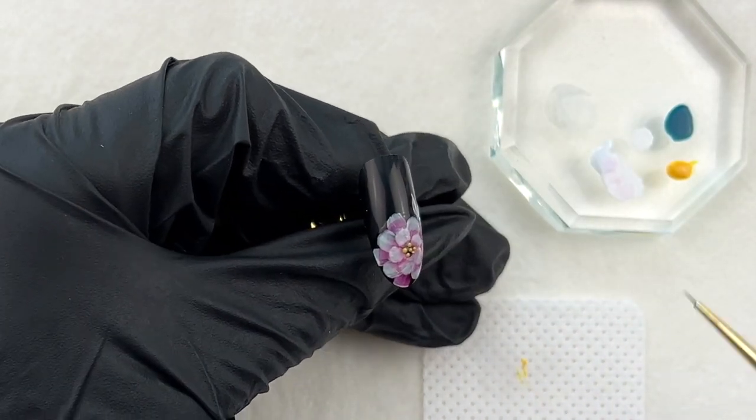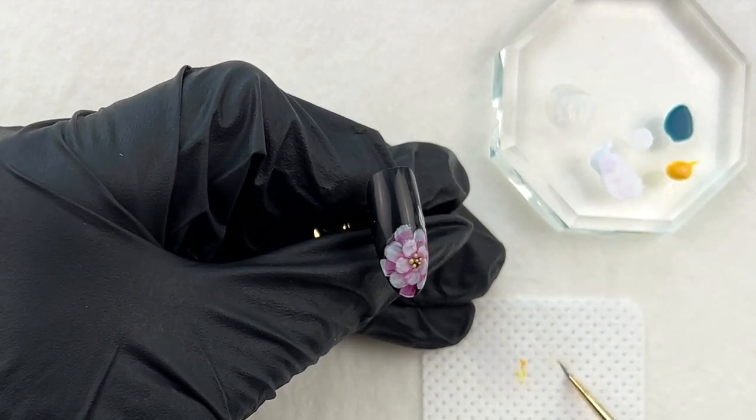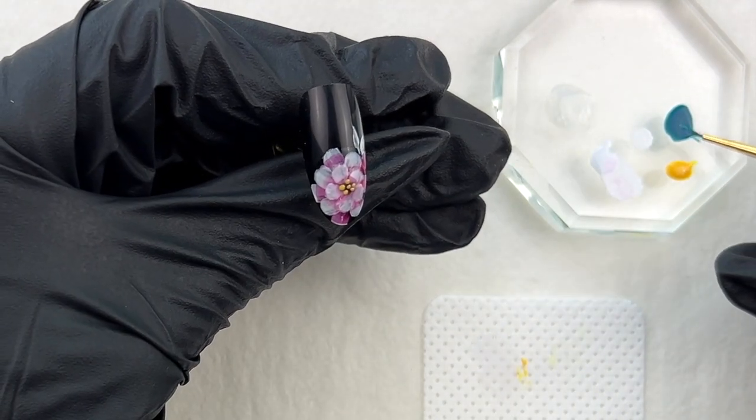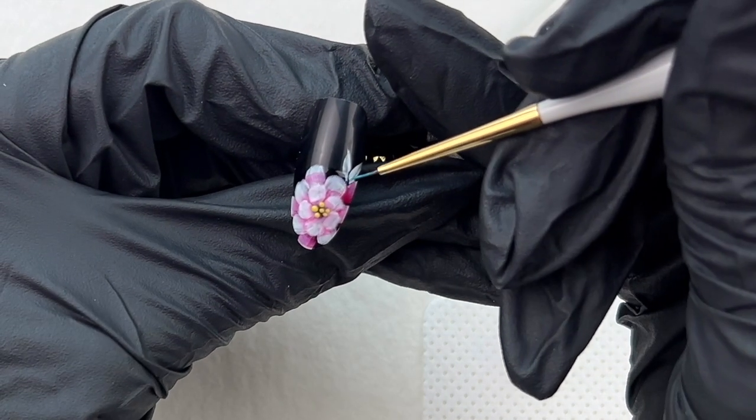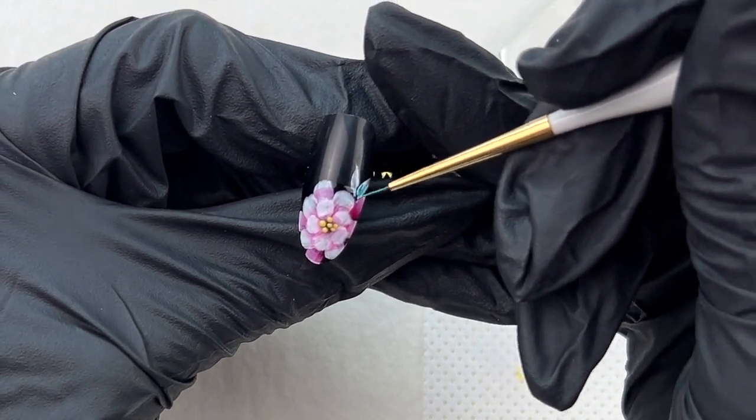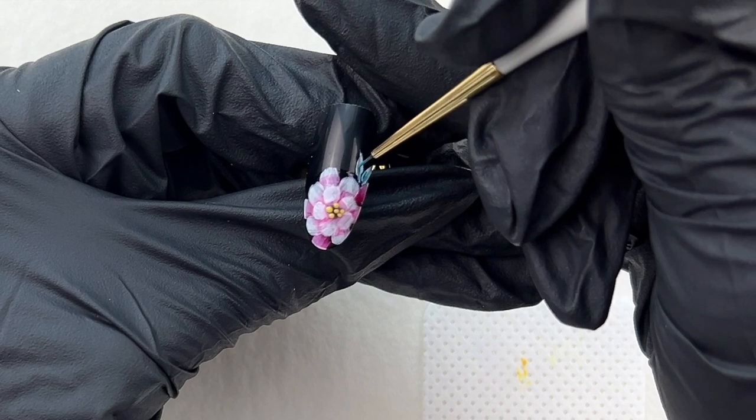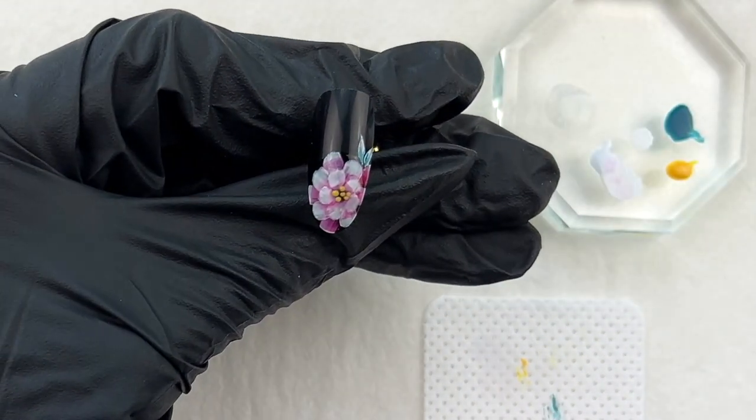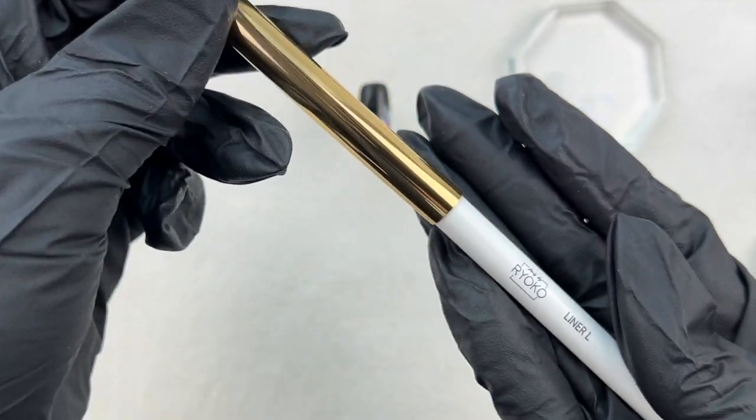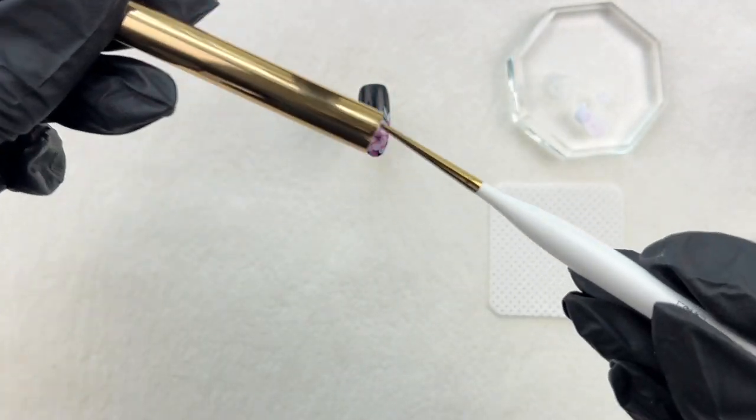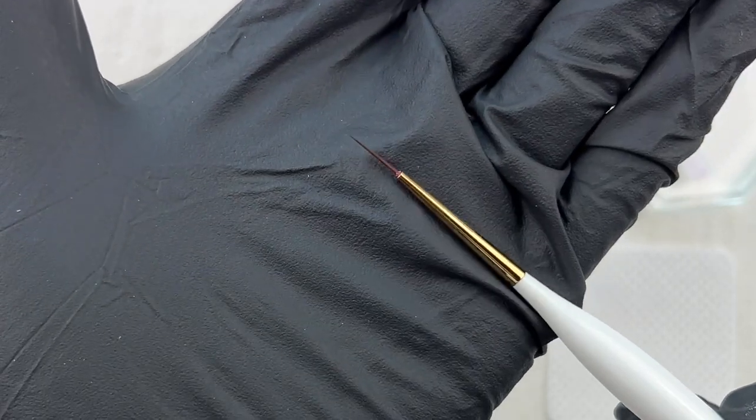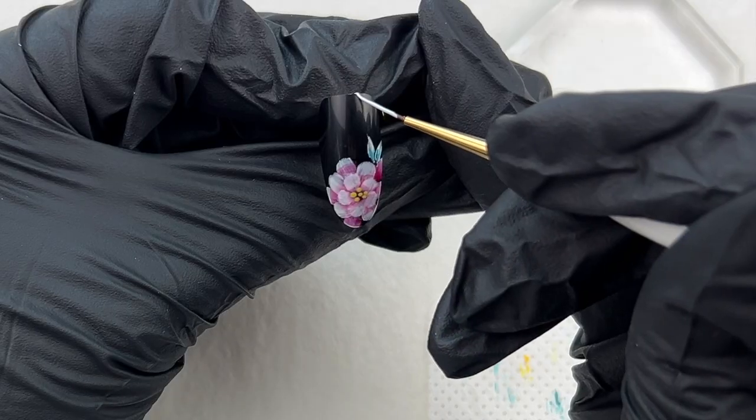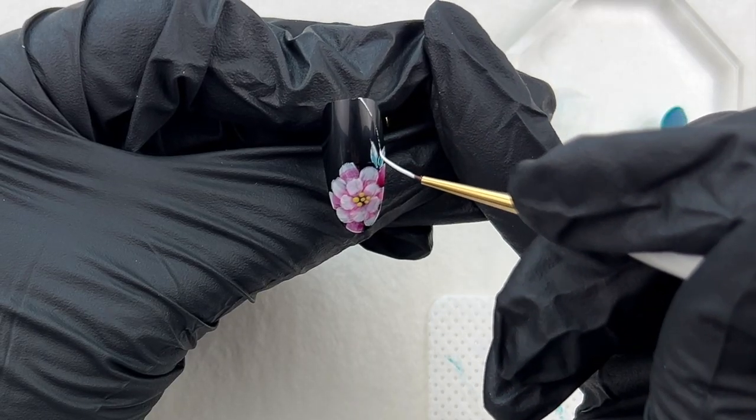Clean the brush with clear gel, then add details on the leaves. I'm adding the long lines using the liner XS brush and a white gel.